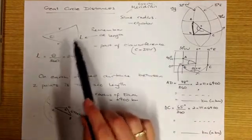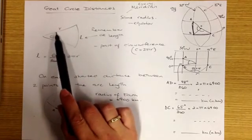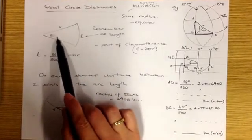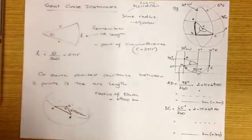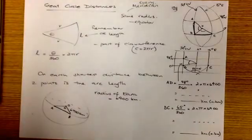Part of that circumference - which part is it? It's a fraction, and the fraction is θ/360 × 2π × r.